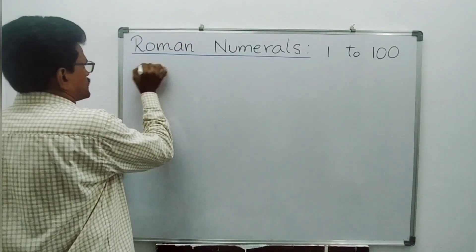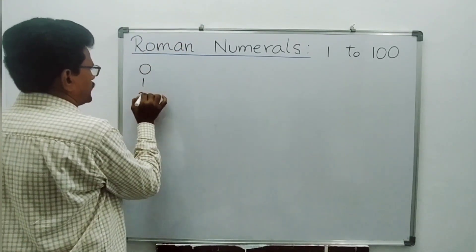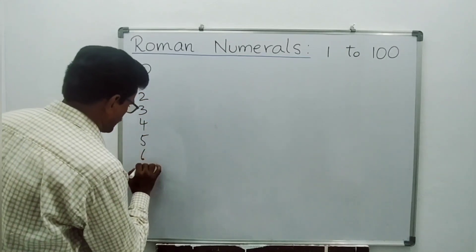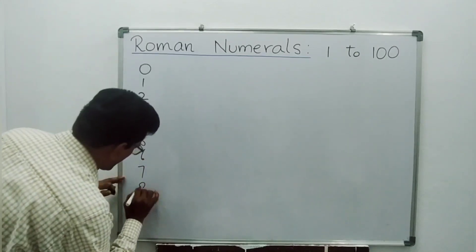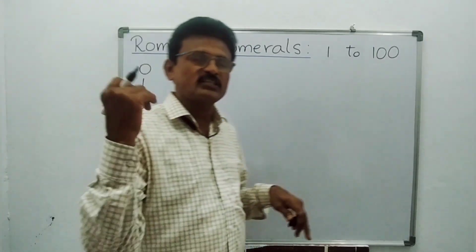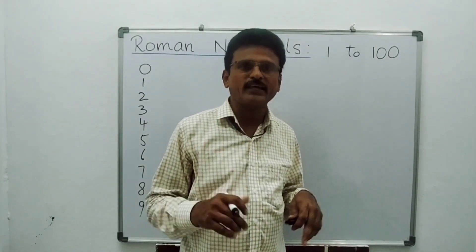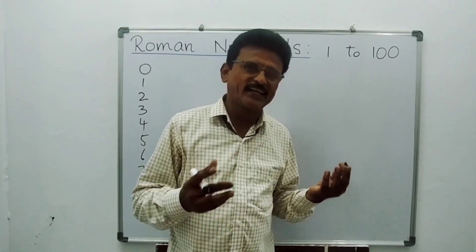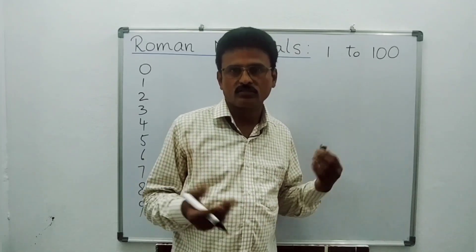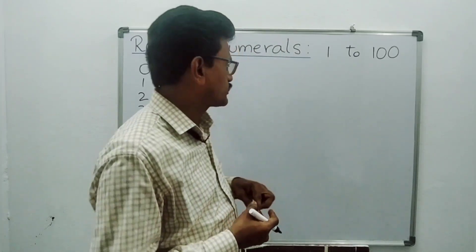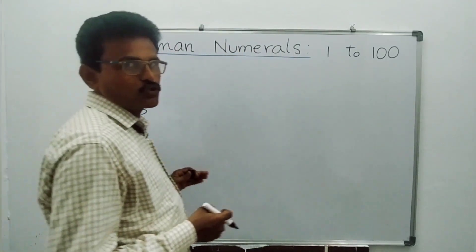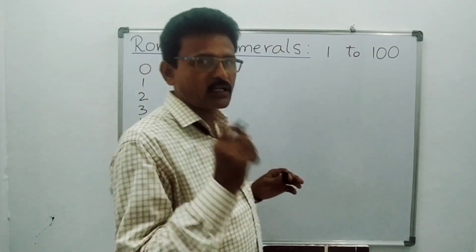We are using these numbers: 0, 1, 2, 3, 4, 5, 6, 7, 8, and 9. These are 10 digits. By using these 10 digits only, we are creating so many numbers. These digits are used in the Hindu-Arabic system.